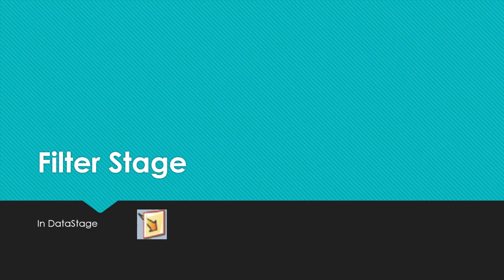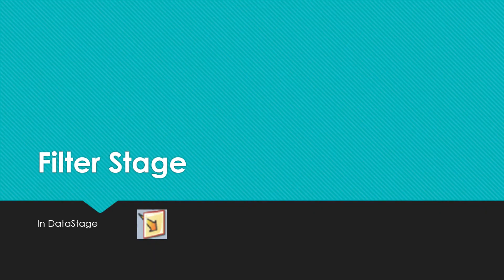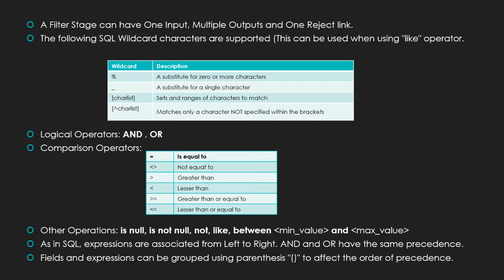A Filter Stage can have one input link, many output links, and one reject link. The WHERE clause in the Filter Stage can make use of general SQL wildcard characters, as shown in this table, along with the LIKE operator. We will see a few examples using these wildcard characters in the next slides.